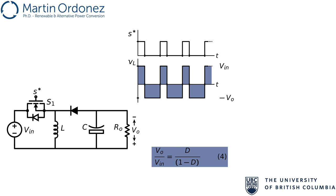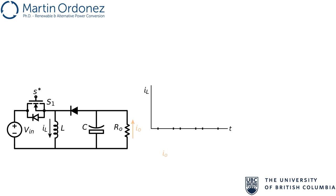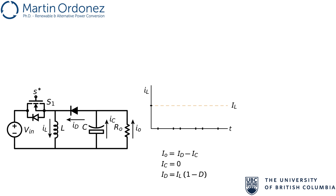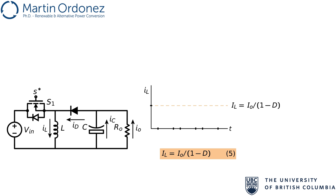Since D can vary between zero and one, the voltage at the output can be lower, equal, or higher than the input voltage. The current in the inductor IL can be found as a function of the output current IO, which equals the diode current ID minus the capacitor current IC. In steady state, the average current in the capacitor is zero since there is no net change in the voltage, and the average diode current equals the average inductor current times one minus D, since the diode only carries the inductor current during the off time. Therefore, the average output current equals the average inductor current times one minus D, which means the average inductor current equals the average output current determined by the output voltage and resistor, over one minus D.